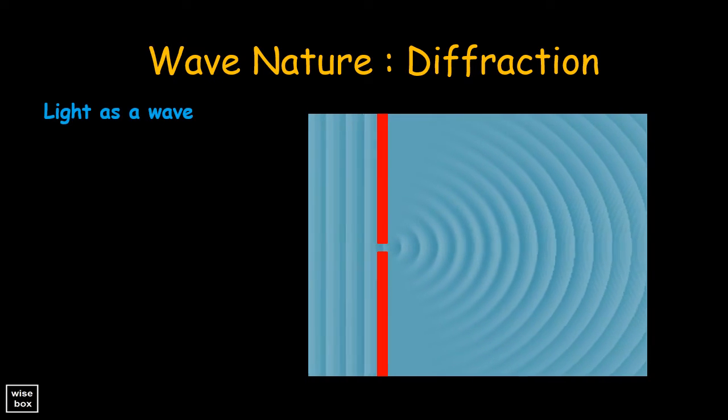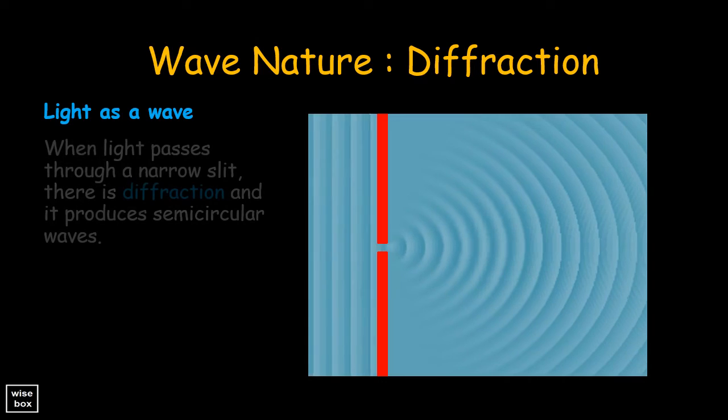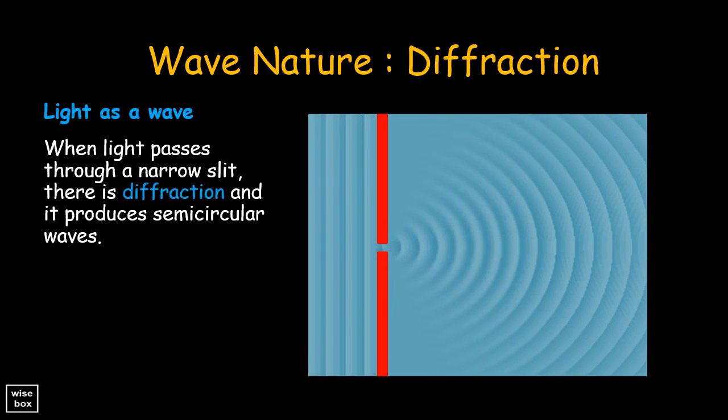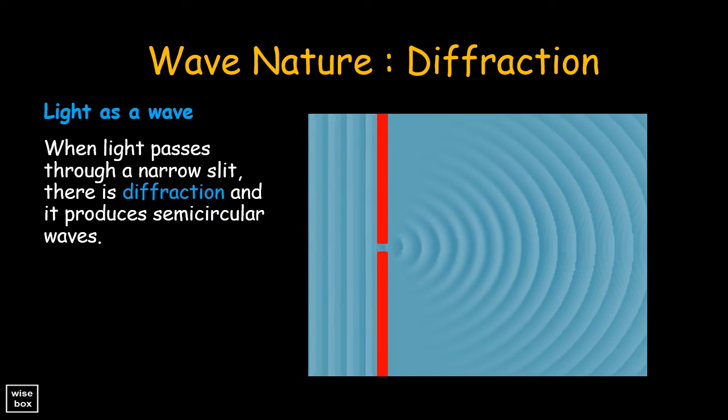Here is an illustration of the wave nature of light. When light passes through a narrow slit, there is diffraction and it produces semi-circular waves.